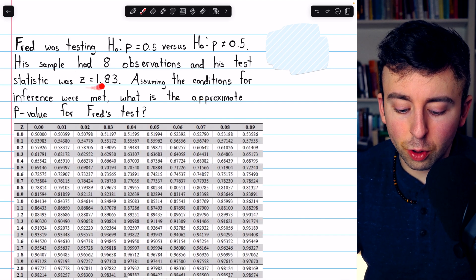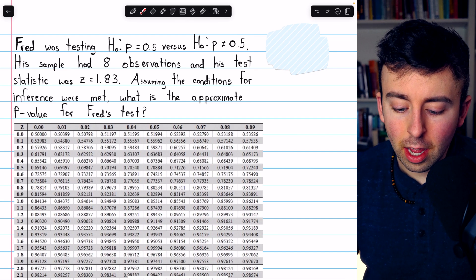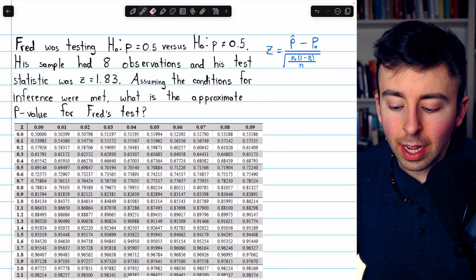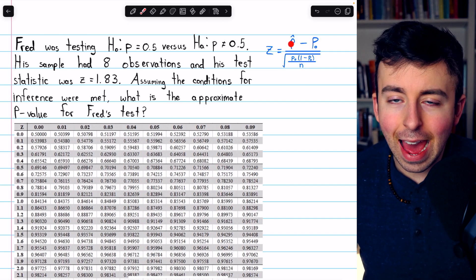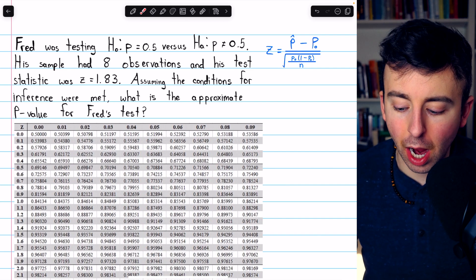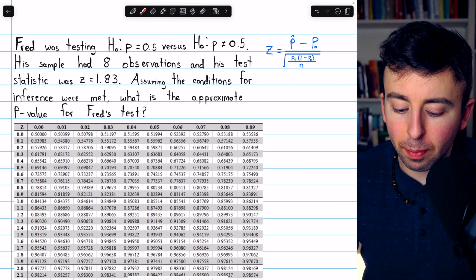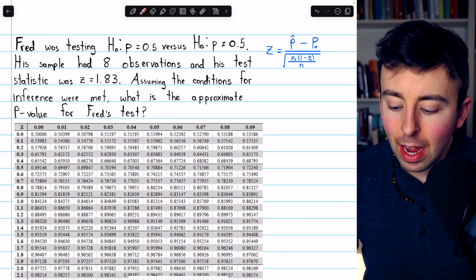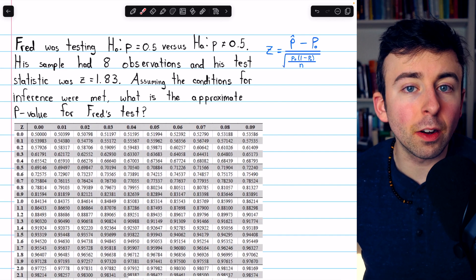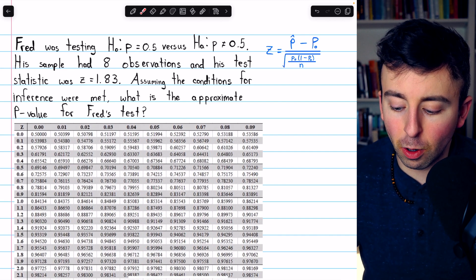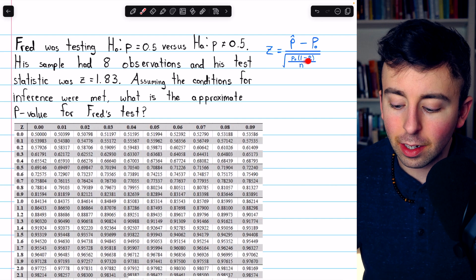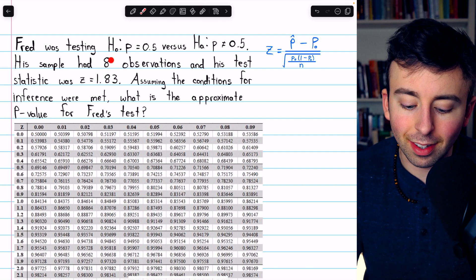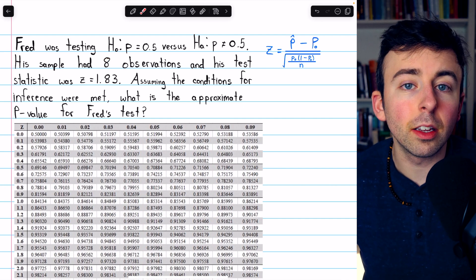This problem is nice enough to give us the test statistic, but if you had to calculate it on your own, this would be the formula. p-hat, our sample proportion, which we're not given in this problem, minus the assumed population proportion from the null, in this case that would be 0.5, and then divide by the assumed standard deviation, so p0 times 1 minus p0, divided by the sample size, which in this case is 8, all in a square root.